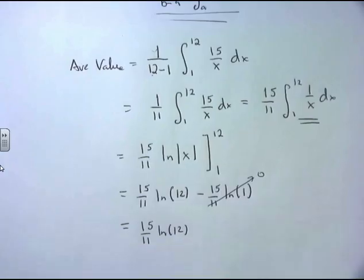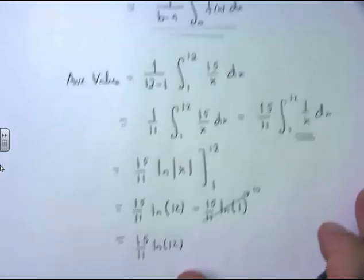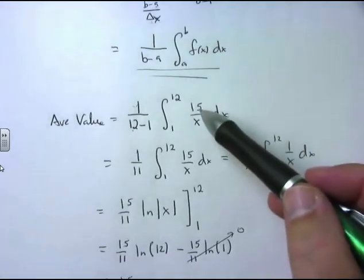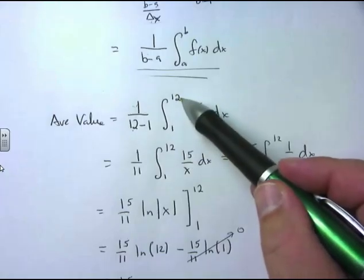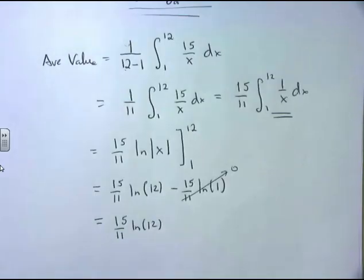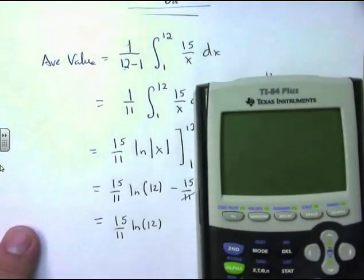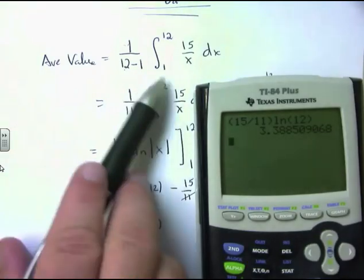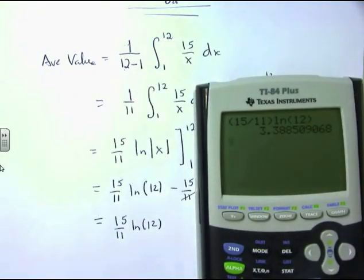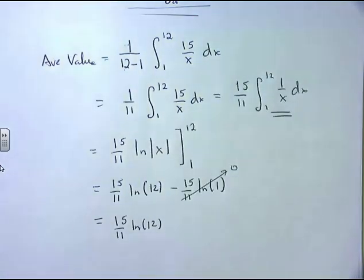The final answer is (15/11)·ln(12). In decimal form, that's approximately 3.3885. This means that the function 15/x, on average between x = 1 and x = 12, has a y-coordinate of about 3.3885. I hope this has been helpful, and I'll see you in the next video.